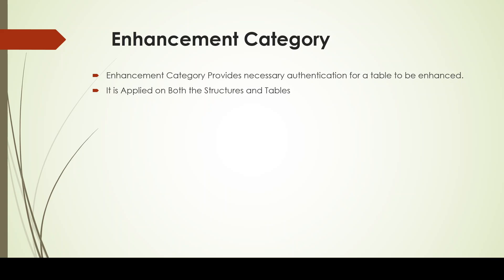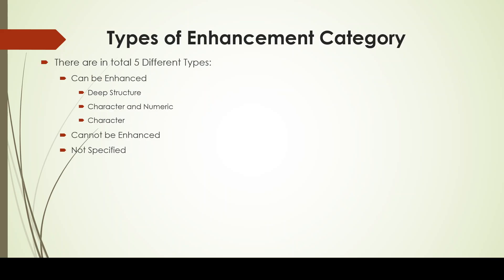The enhancement category is applicable for both structures and tables. There are totally five different types of enhancements. When you say 'can be enhanced,' there are three different options: it can be enhanced with deep structure, it can be enhanced with character and numeric, or it can be enhanced with character. The fourth option is 'cannot be enhanced' and the fifth option is 'not specified.'